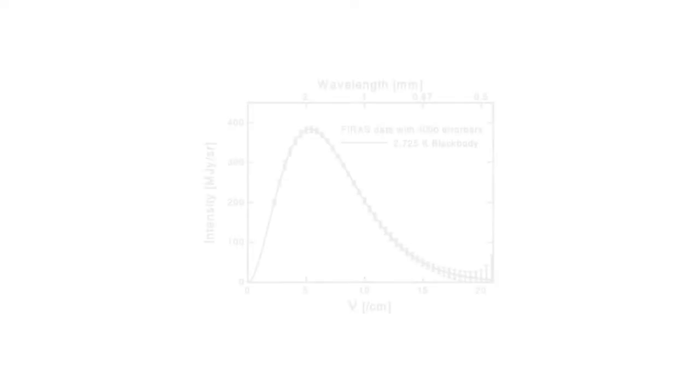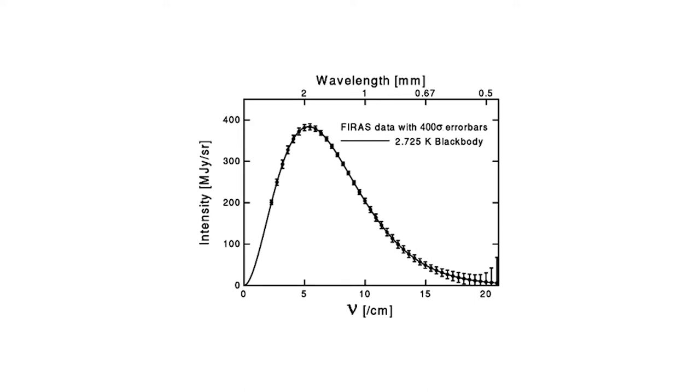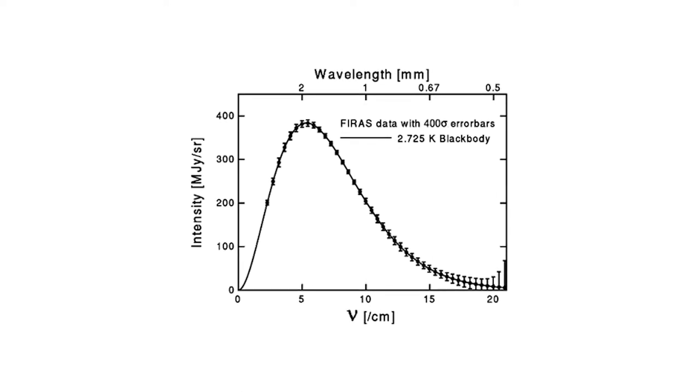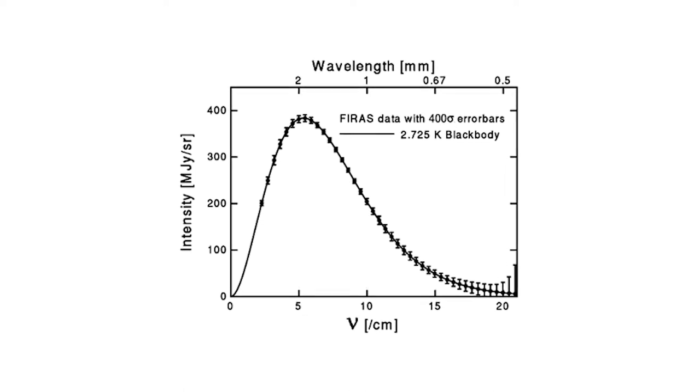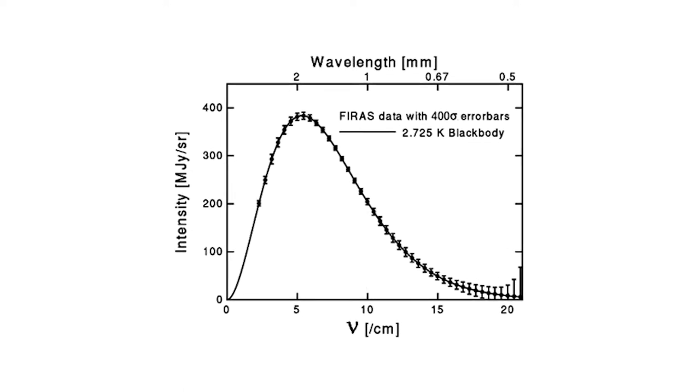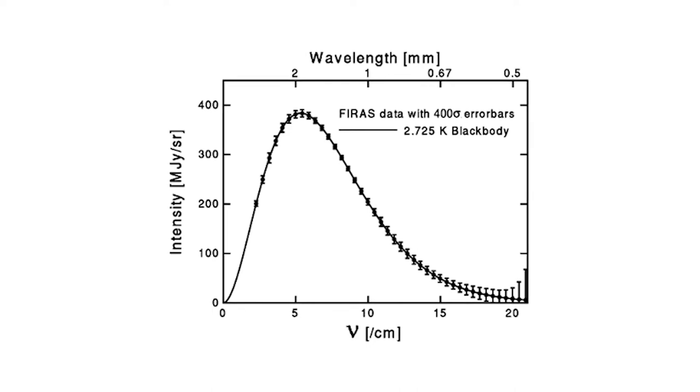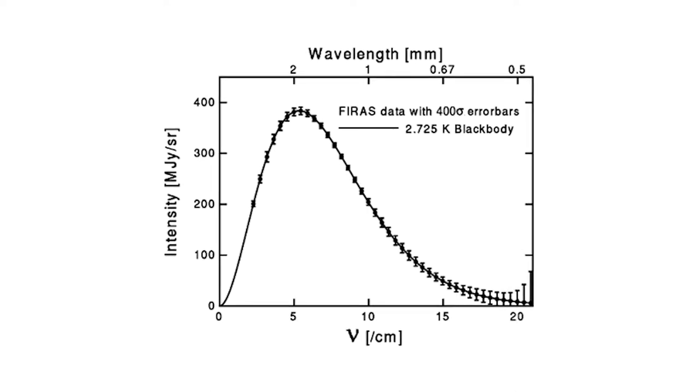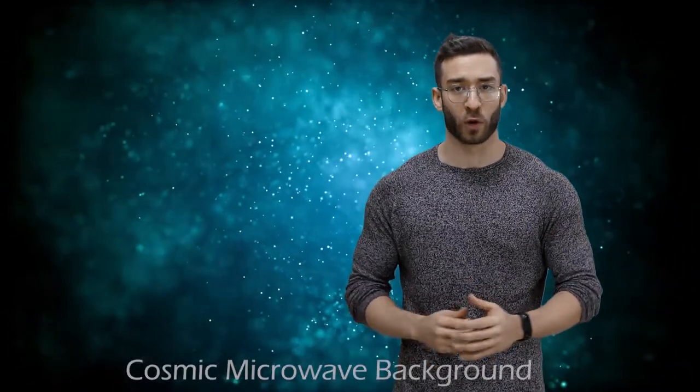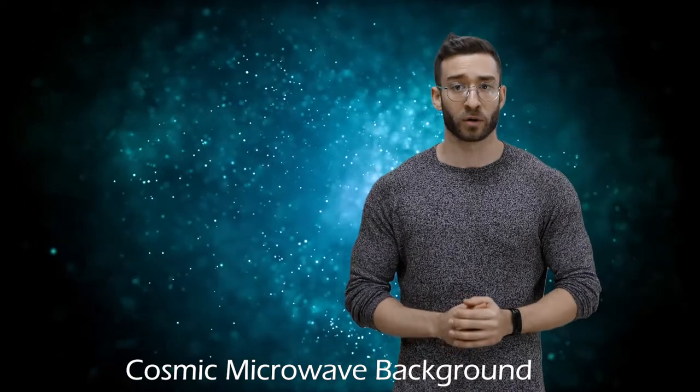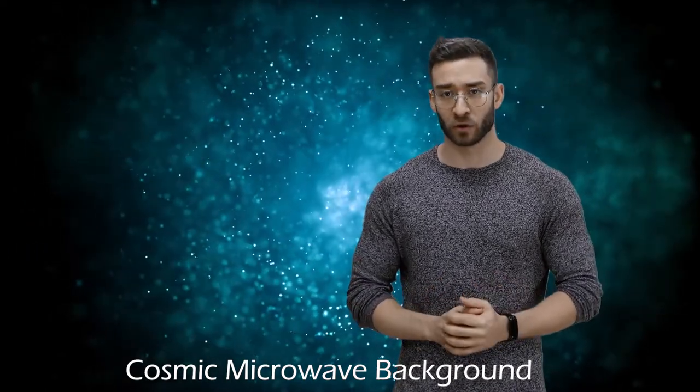The signal has a spectrum, a distribution of wavelengths characteristic of a black body, a dense, hot, opaque medium, just like the universe was during its infancy. It arrives on Earth from every direction, just like we would expect from a cosmic signal. This emission is now known as the cosmic microwave background, and its detection is a glorious confirmation of the expanding universe.